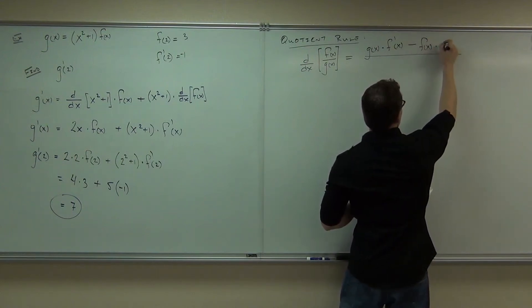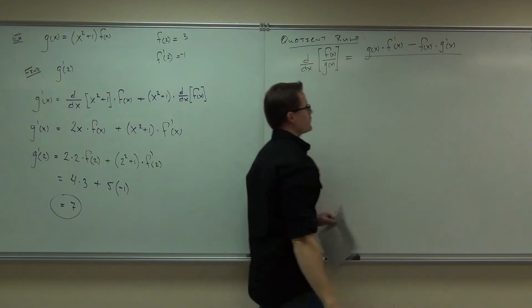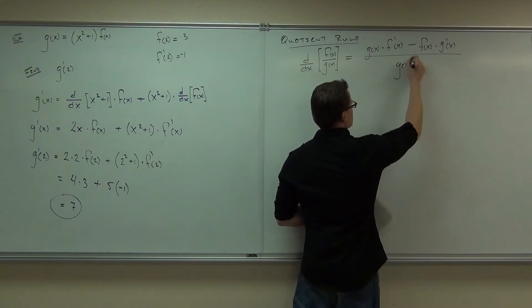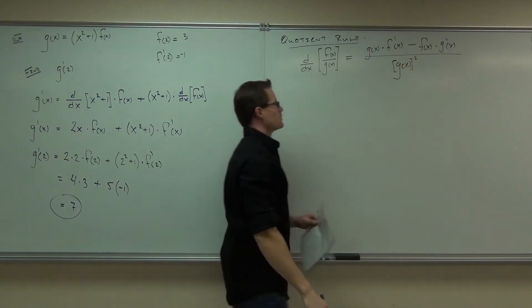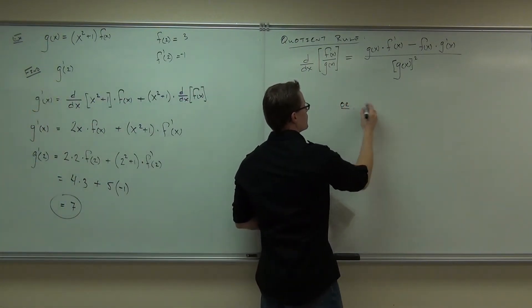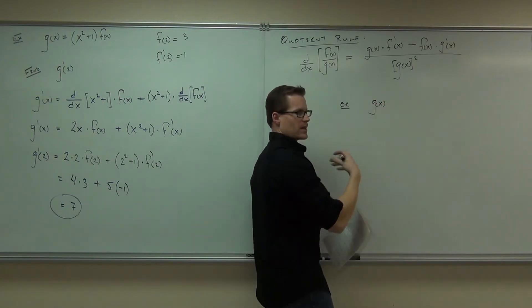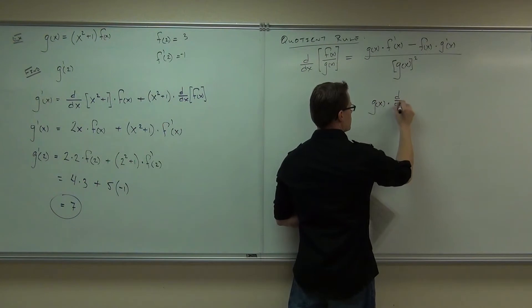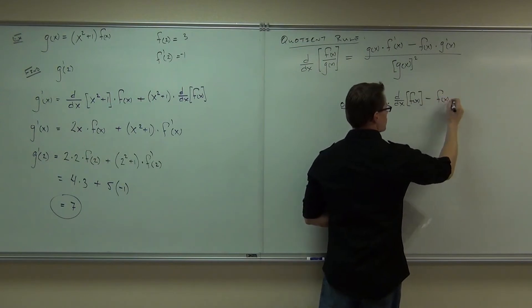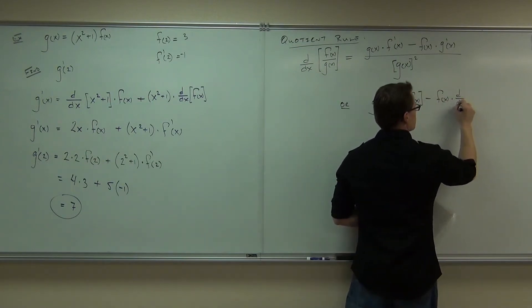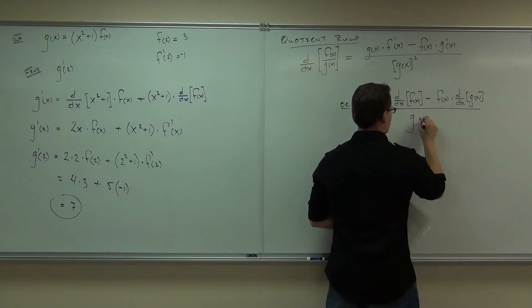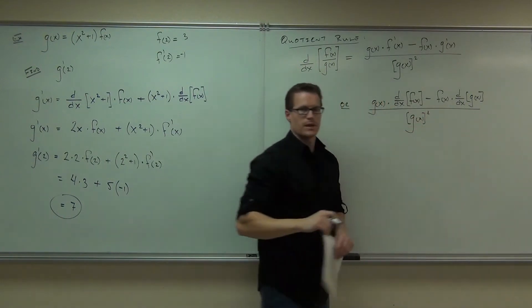function times the derivative of the low function all over squared. Or if you prefer the d/dx format like I do, this says the same thing.